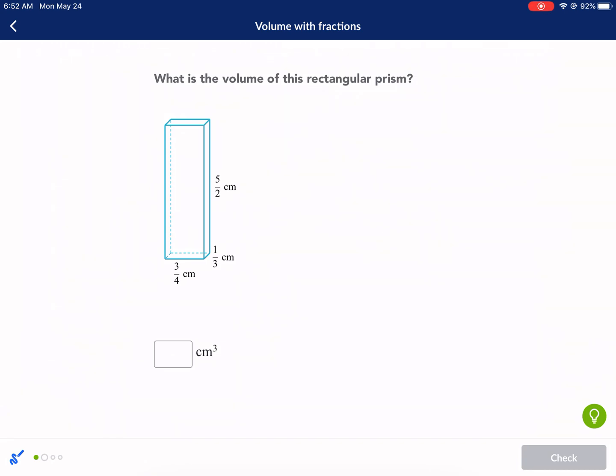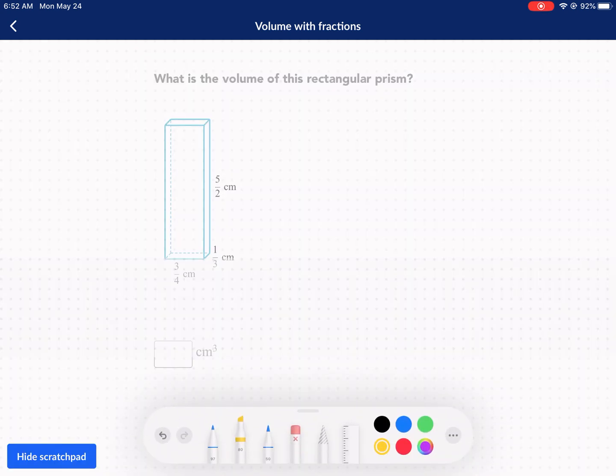What is the volume of this rectangular prism? We're going to do the same thing - multiply all the dimensions together. We'll call that our base. It doesn't really matter which one we call our base, but that's what I'm going to use. So that means I'm going to multiply 1/3 times 3/4. And then my height is 5/2.